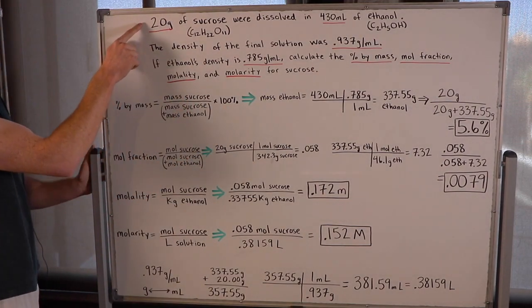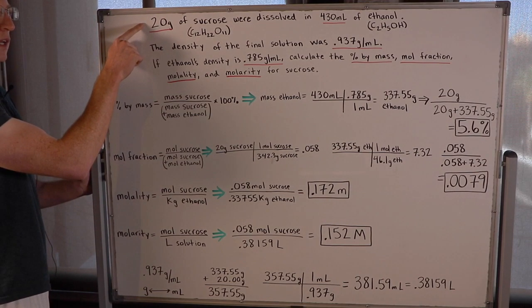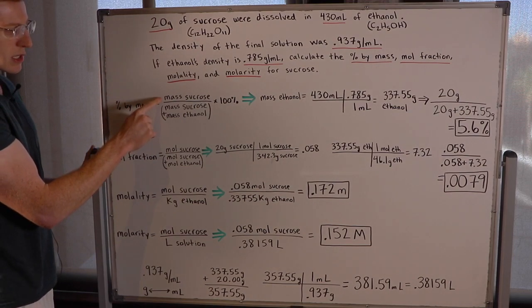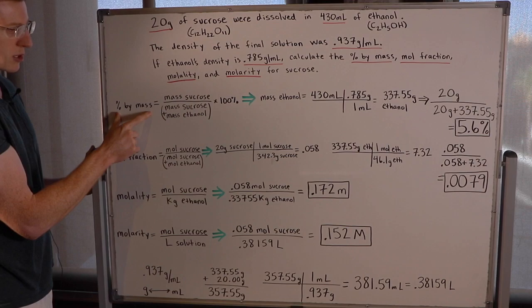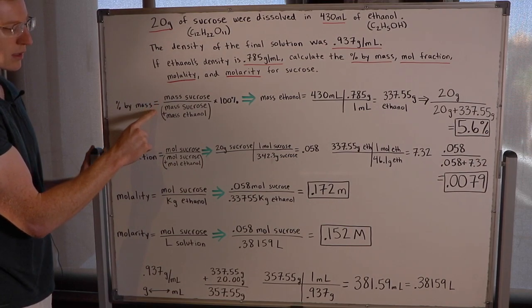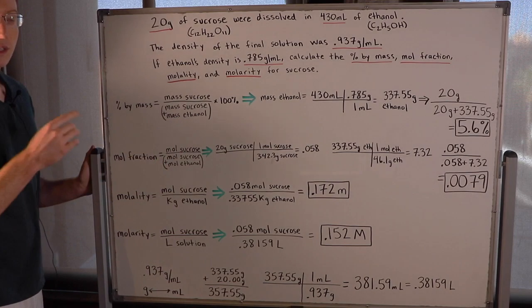So I saw I already have the mass of sucrose in grams, 20 grams of sucrose, that was given to me in the problem. And it really doesn't matter which units of mass we work with when we're calculating percent by mass, as long as they all match in the numerator and the denominator. So really what we need to find here is the mass of ethanol in grams.